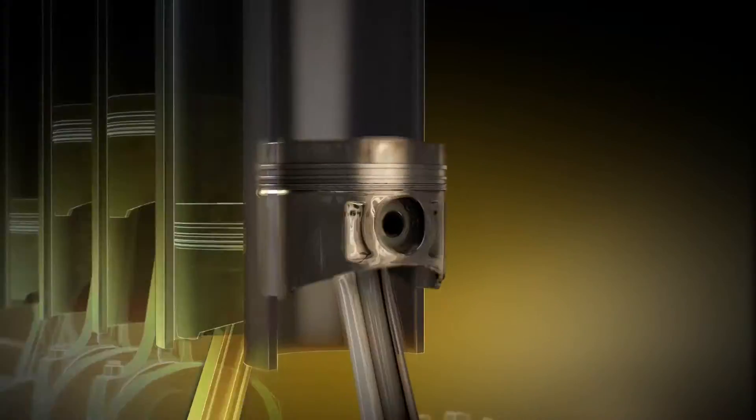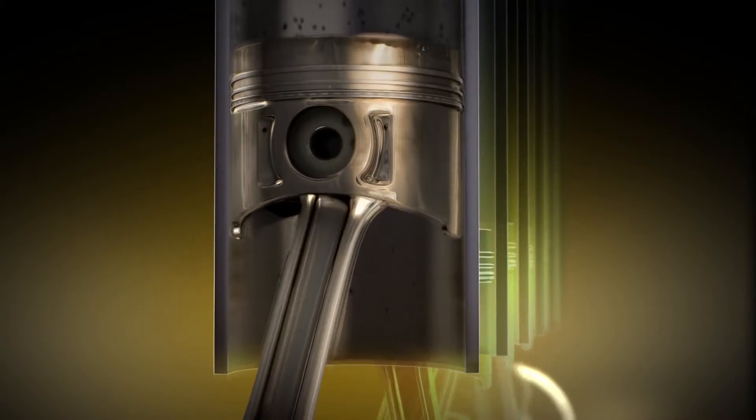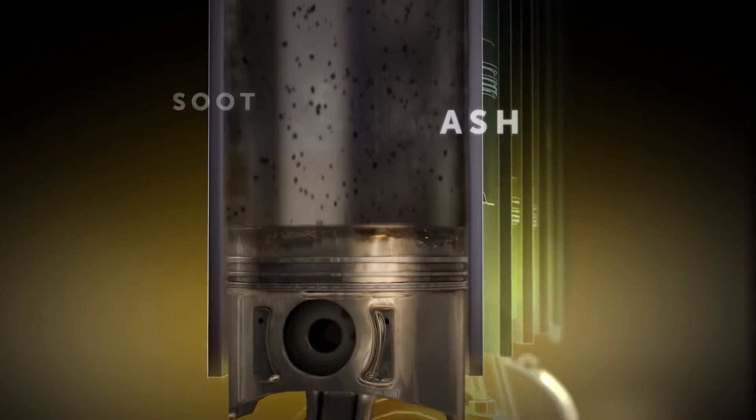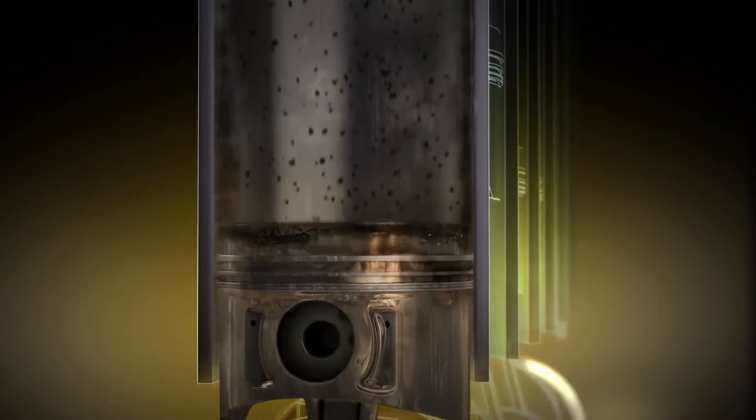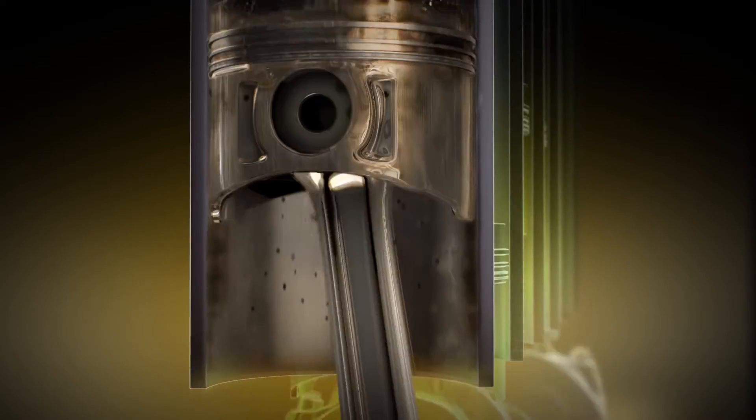As combustion occurs in an engine, it produces byproducts like soot and ash. Normally, the engine lubricant prevents these byproducts from attaching to critical engine parts.